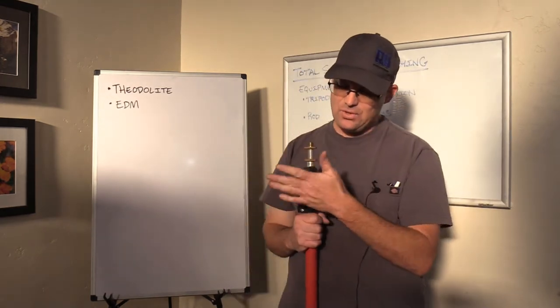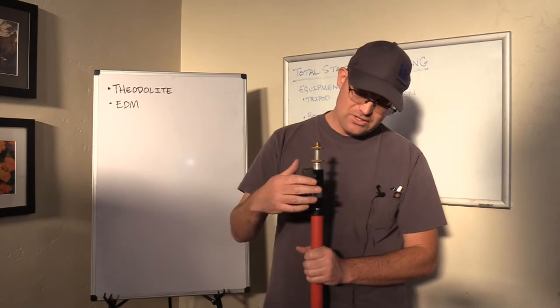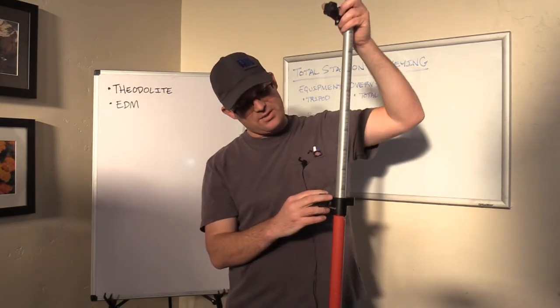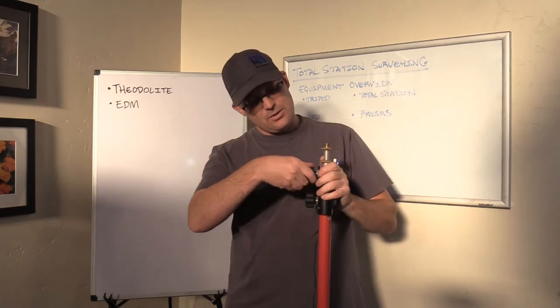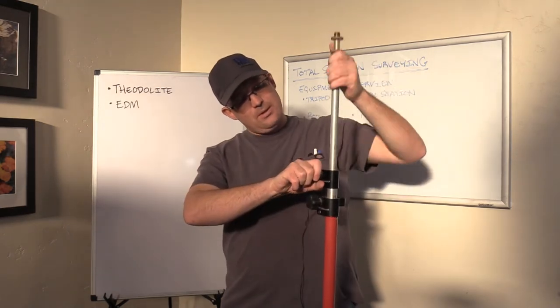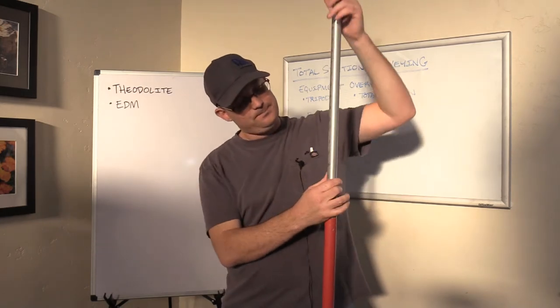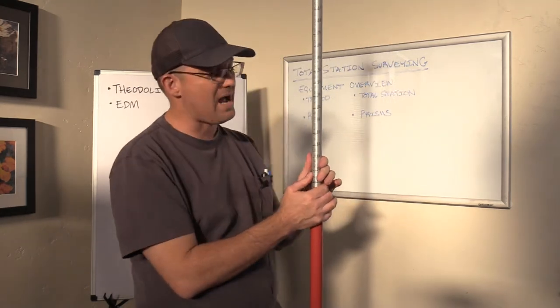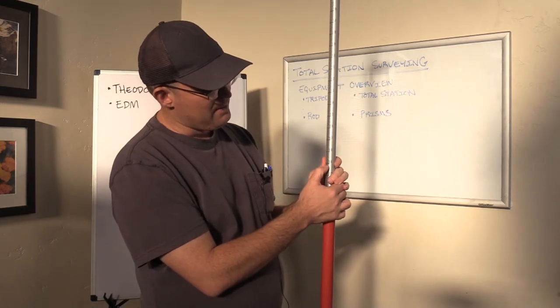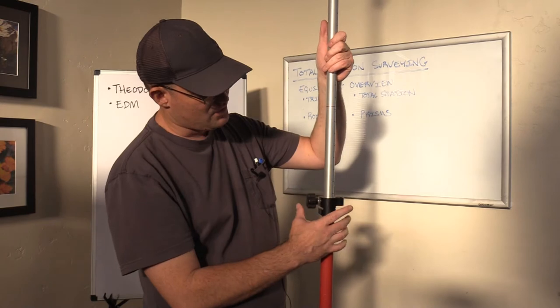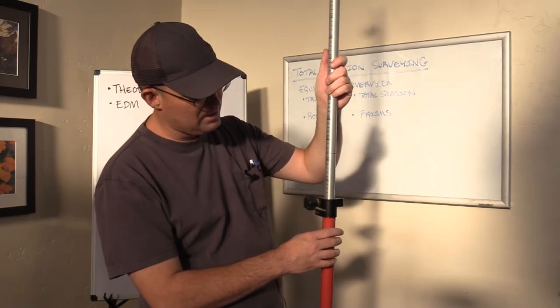Then we have these two knobs here. The reason we have these two knobs, this is what they call a telescoping rod, so the height of the rod is adjustable. There's two pieces here that you can use for this rod. I don't know if you guys can see this, but the rod is graduated with the height measurements. This is in tenths of a foot here, and this is in meters.